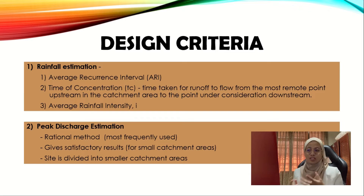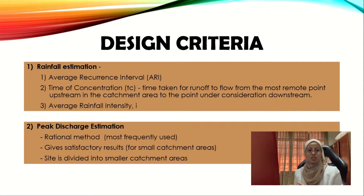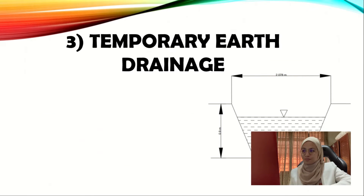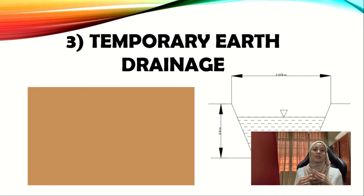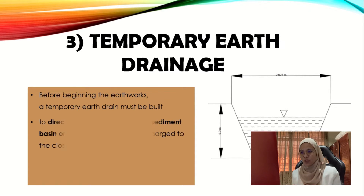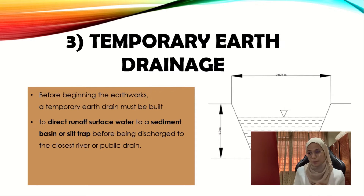The second criteria is peak discharge estimation. They use the rational method, as it gives satisfactory results, but it must be applied to small catchment areas. Due to this, they divided the proposed site into smaller catchment areas for easier calculation. The third design criteria is temporary earth drainage. Before the beginning of earthworks, it is important to build a temporary earth drainage to direct runoff surface water to a sediment basin or silt trap before being discharged to the closest river or public drain.